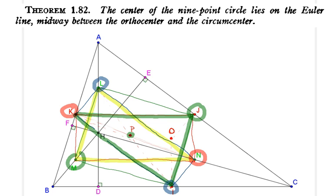Now where is the orthocenter of the yellow triangle? It is the orthocenter of triangle ABC. But how about the orthocenter of the green triangle? Now surprisingly, it is the circumcenter of ABC. So why is that?